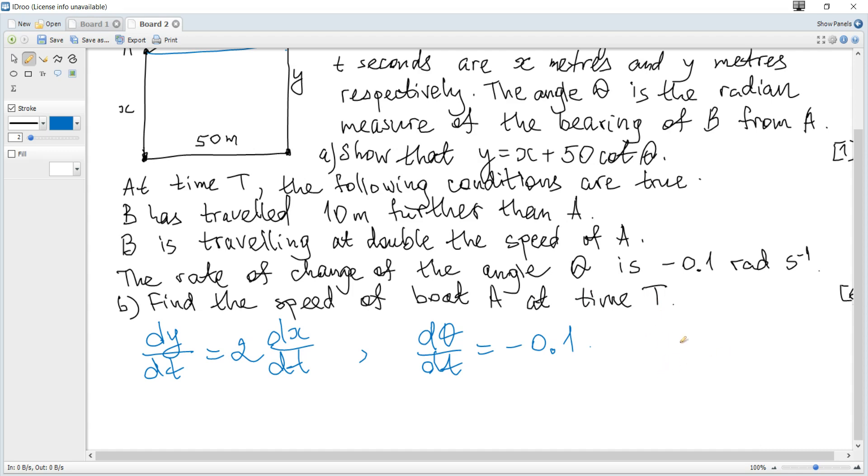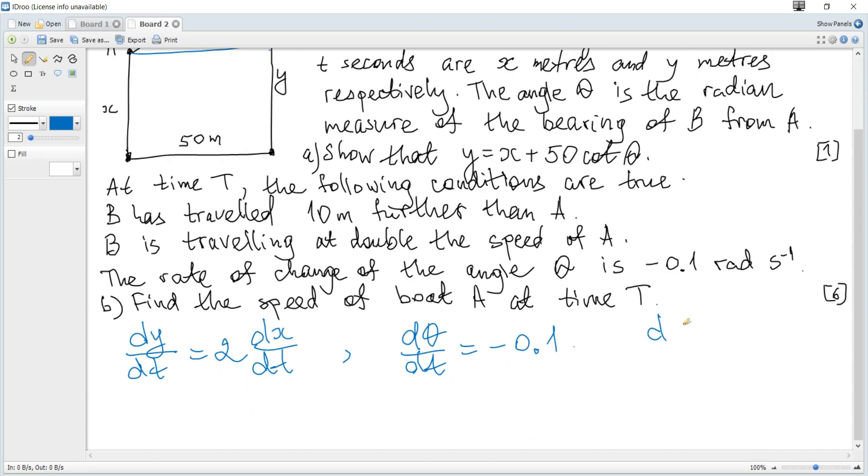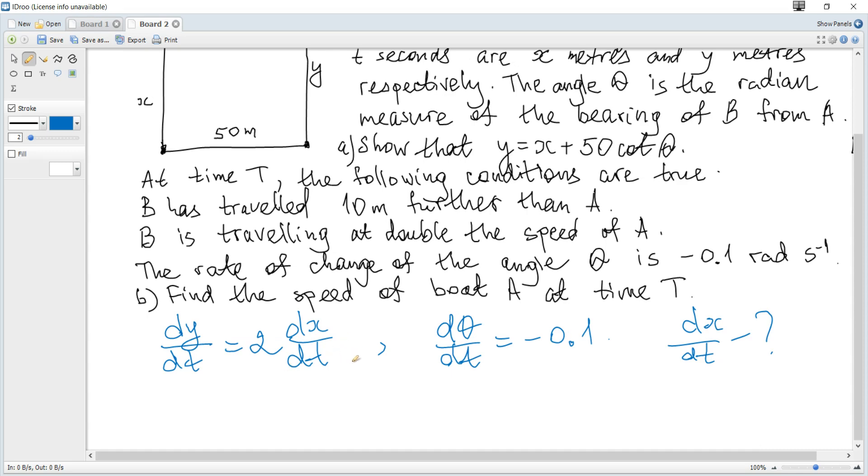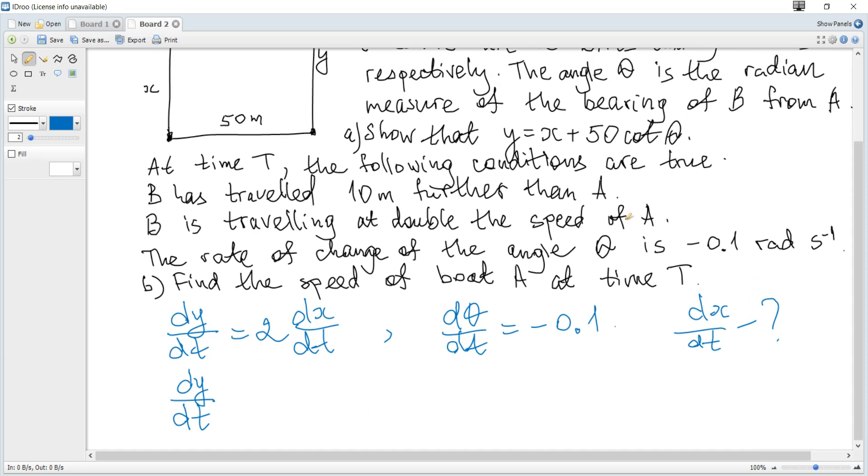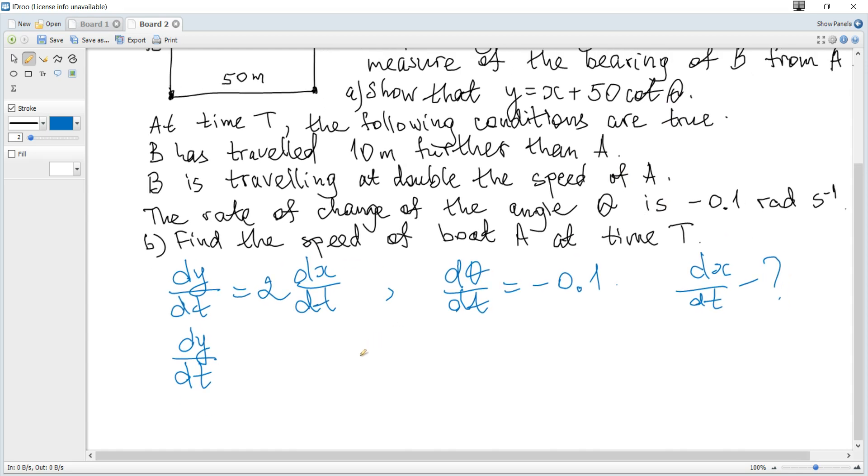So we need dx over dt. And these derivatives to arise we can differentiate this expression with respect to t. So we get dy over dt. y and x are functions of time. And also theta changes. So theta is also a function of time.